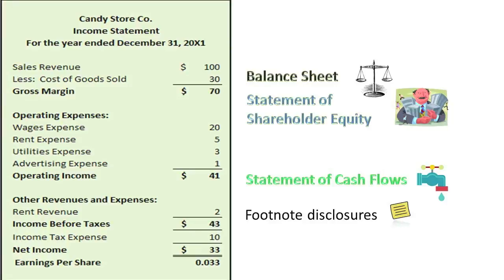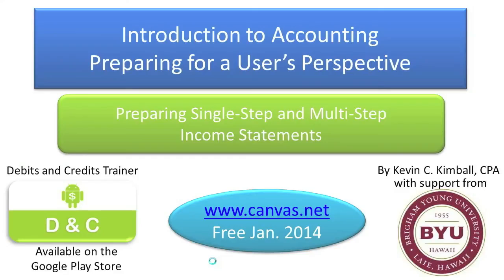By now, you should be able to create a single-step income statement and a multi-step income statement. You should also be able to read these income statements focusing on key pieces of information such as net sales revenues, gross margin, operating income, income before taxes, and net income. In the next topic, we will analyze the income statement a little further.